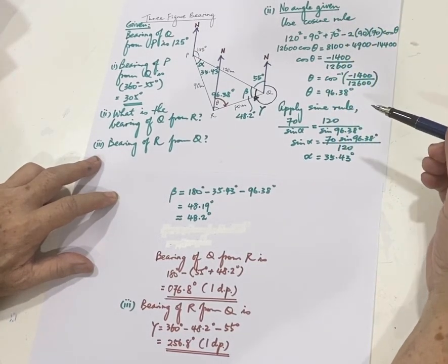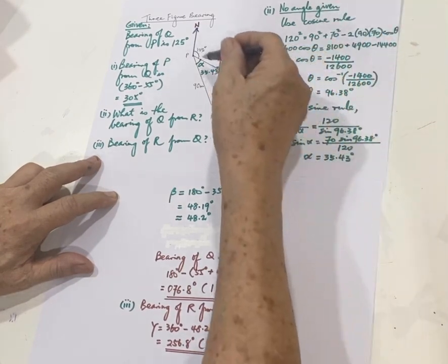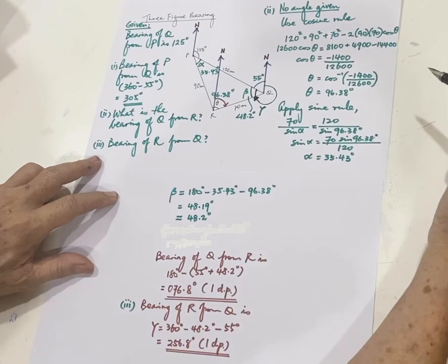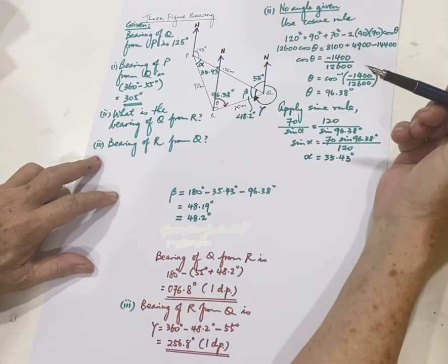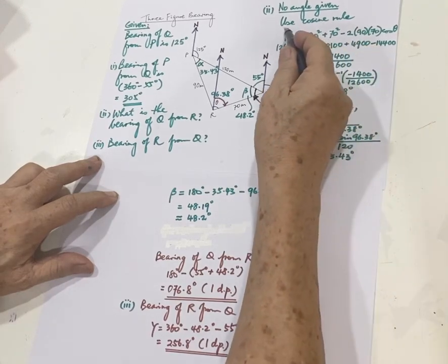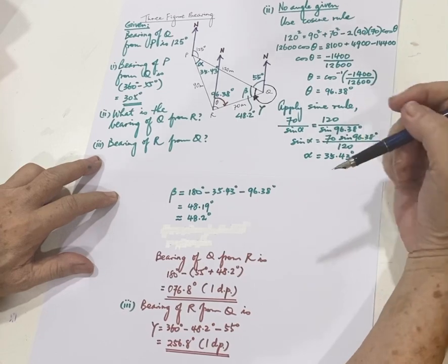When you have no angle given in a triangle, like in this case, you only have three sides, 70 meters, 90 meters, and 120 meters, you must use the cosine rule. Because the sine rule will need at least one angle.